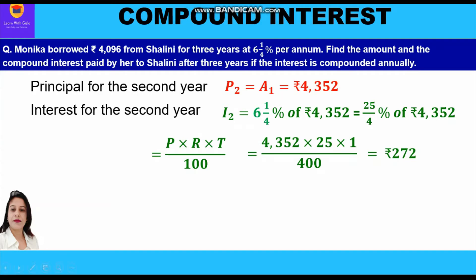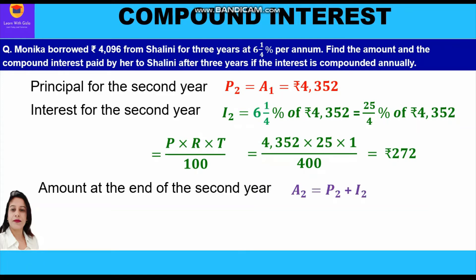Now we shall calculate the amount at the end of the second year, which is the sum of the principal of the second year and the interest of the second year. So 4352 plus 272 equals rupees 4624. This is our amount at the end of the second year, which will become the principal for the third year.